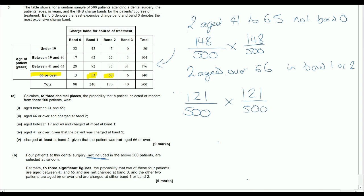So that's where we get our first two marks from. They're either aged between 41 and 65, not in band zero, so that's those two. Or they're aged 66 and over in band one or in band two, so that's those two. So we might write this as 148 over 500 squared, and this one, 121 over 500 squared.